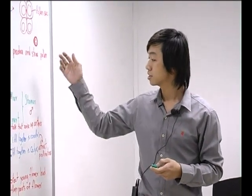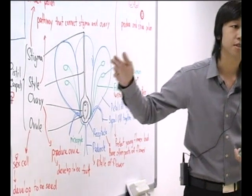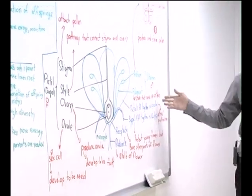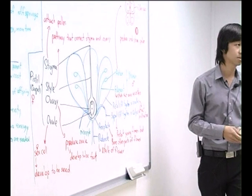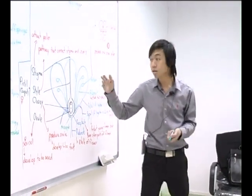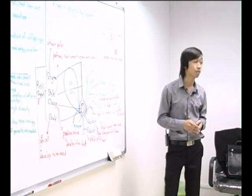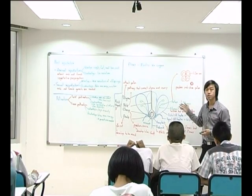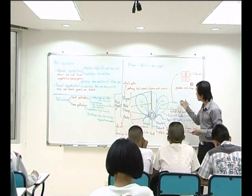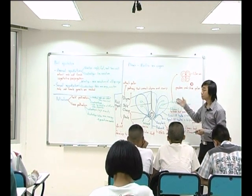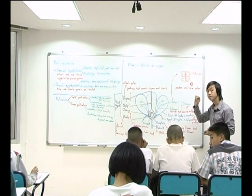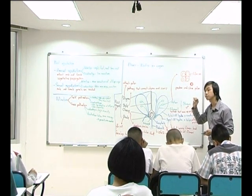They are pistil, stamen, calyx, and corolla. Pistil is the female part of the flower and stamen is the male part of the flower. The stamen is composed of anther and filament. The anther is the part that produces the pollen grain — the male sex cell.